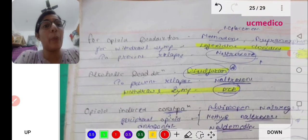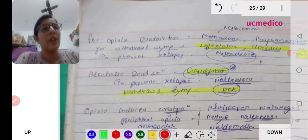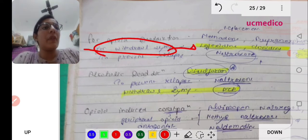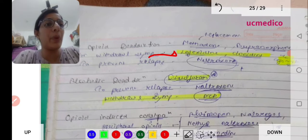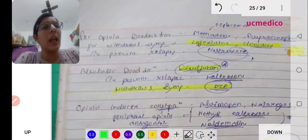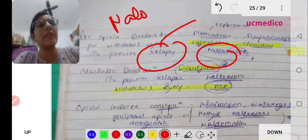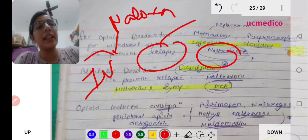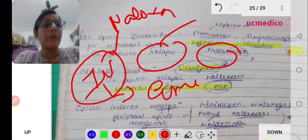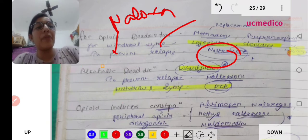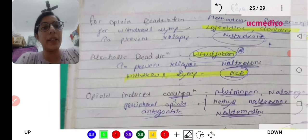Now move toward the next page. Opioid addiction - we already did lofexidine, an alpha agonist drug. For withdrawal symptoms, clonidine. For opioid addiction, we can give methadone and buprenorphine. To prevent relapse, naltrexone. Naloxone is given IV route when there is need of emergency, and we have to continue with naltrexone as maintenance dose.